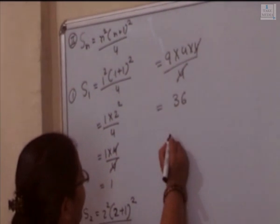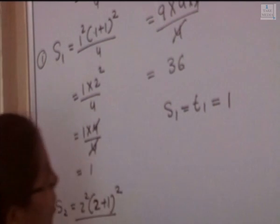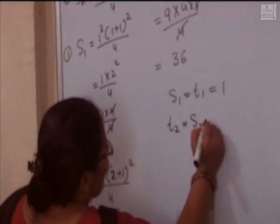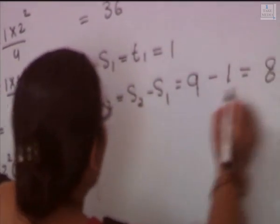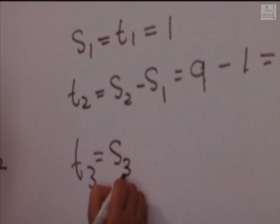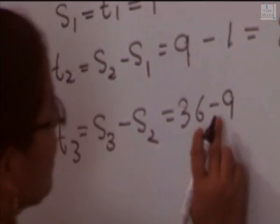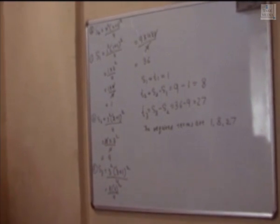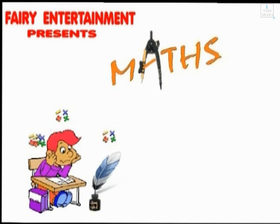We have to calculate the terms. The first term T1: S1 equal to T1, so T1 equal to 1. Now calculate T2: T2 equal to S2 minus S1. S2 is 9, so 9 minus 1 equal to 8. T3 equal to S3 minus S2. S3 is 36, 36 minus 9 equal to 27. So the required terms are T1 equal to 1, T2 equal to 8, and T3 equal to 27.